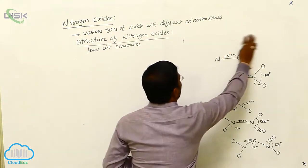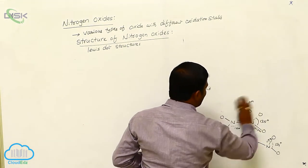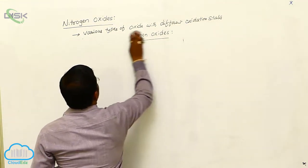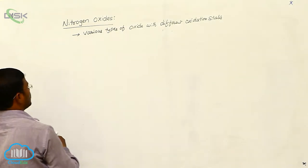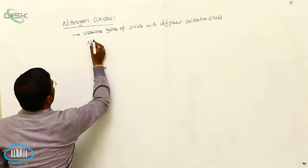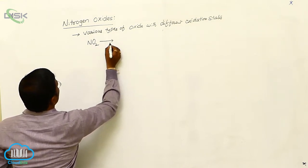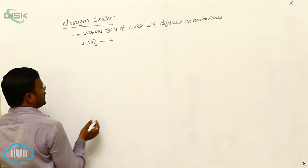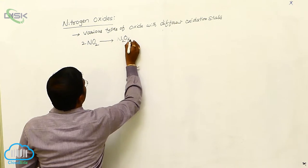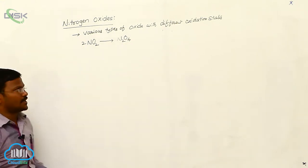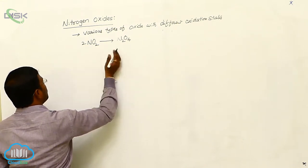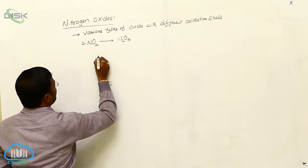Why does nitrogen dioxide dimerize to produce dinitrogen tetroxide? Two moles of nitrogen dioxide molecules interact with each other and produce dinitrogen tetroxide. Why does this take place? The answer for this process will be expected from its structure.